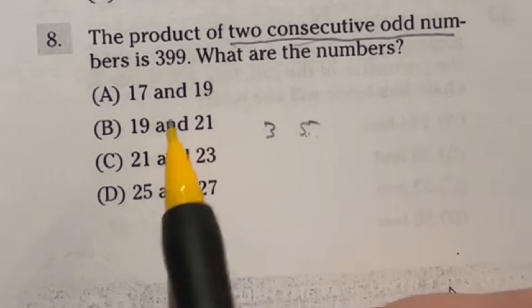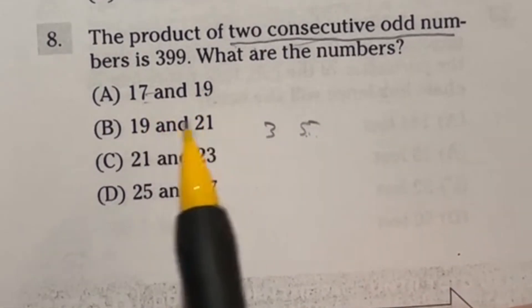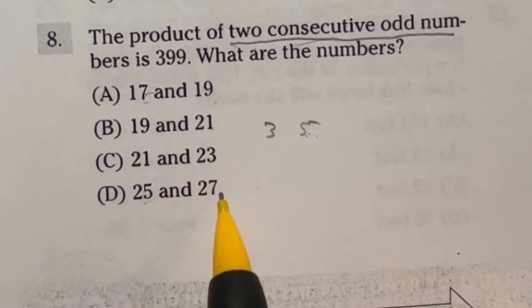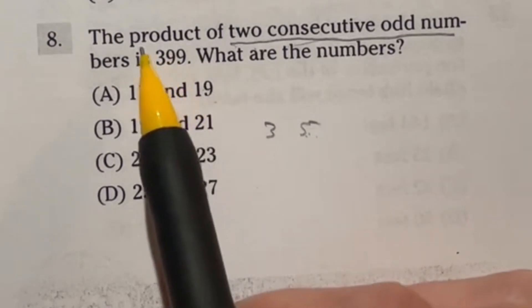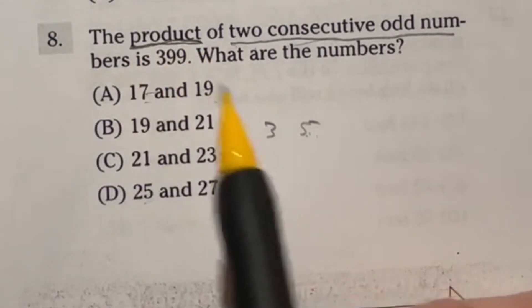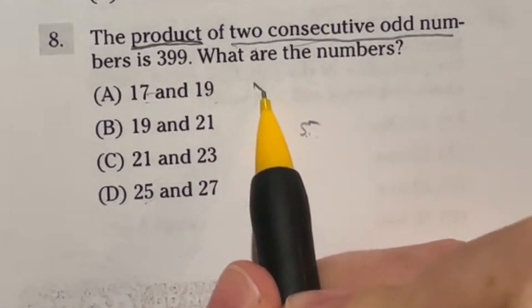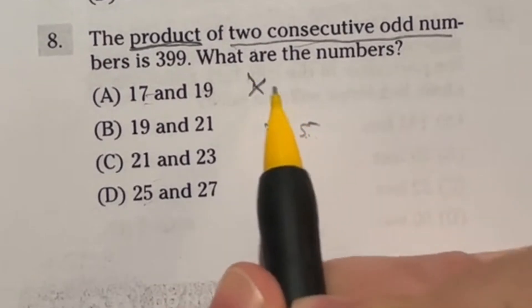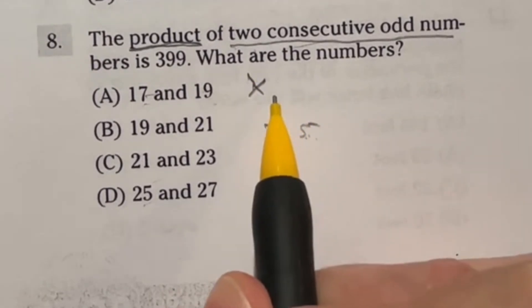If you look at these, all of our options do give you two numbers that are both odd and one right after the other. The next thing you need to know is product. Keep in mind product always means when you multiply them, what is the answer.